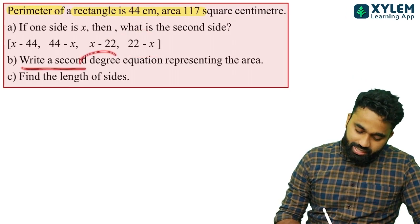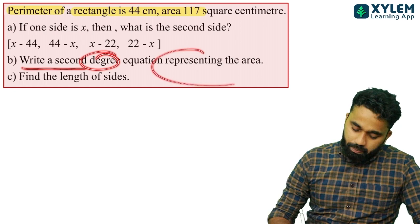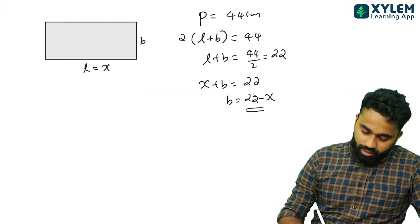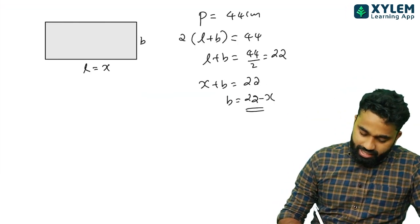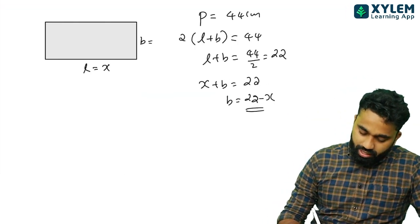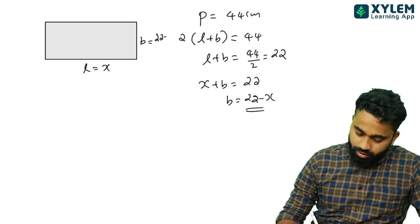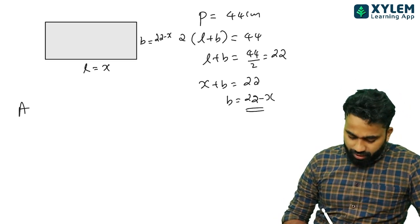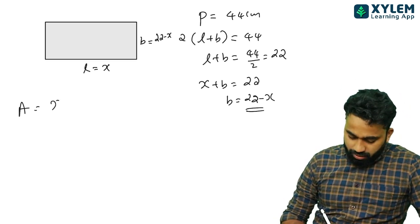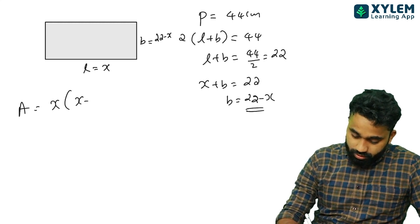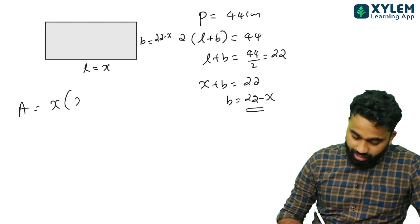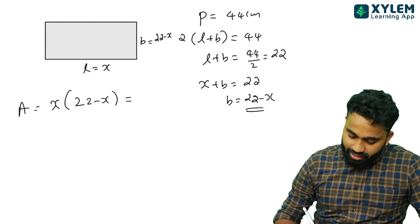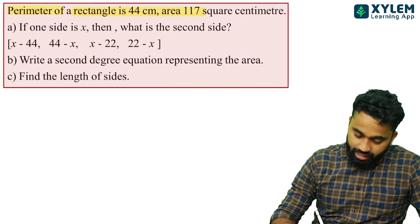Let's write the second equation. The area. Then the length of x is used: area equals x times (22 minus x). To find the area, it becomes 22x minus x squared. That gives us the area expression.